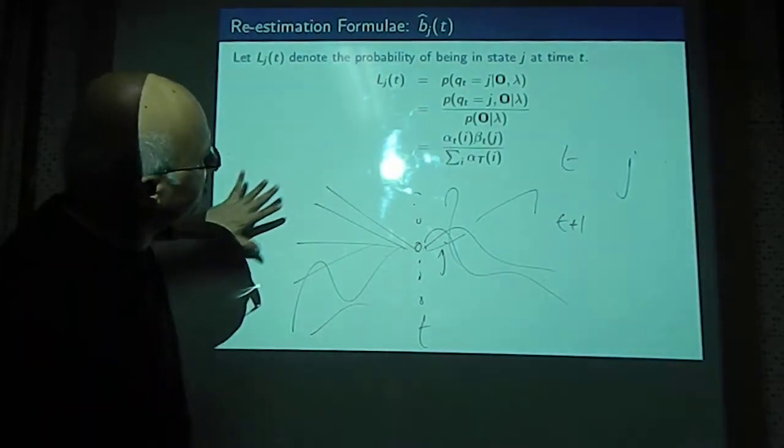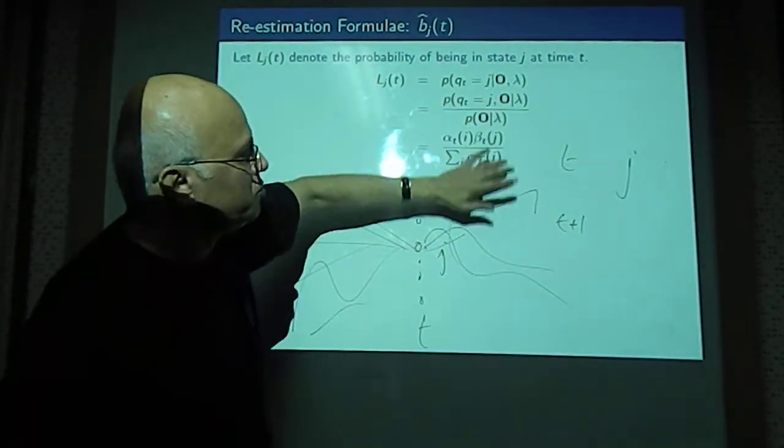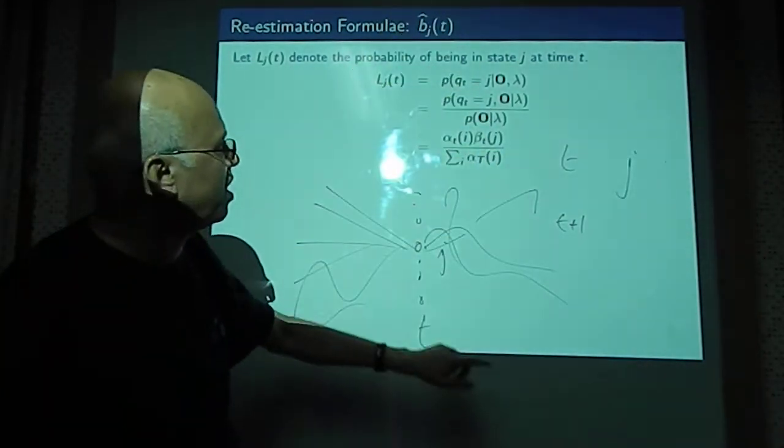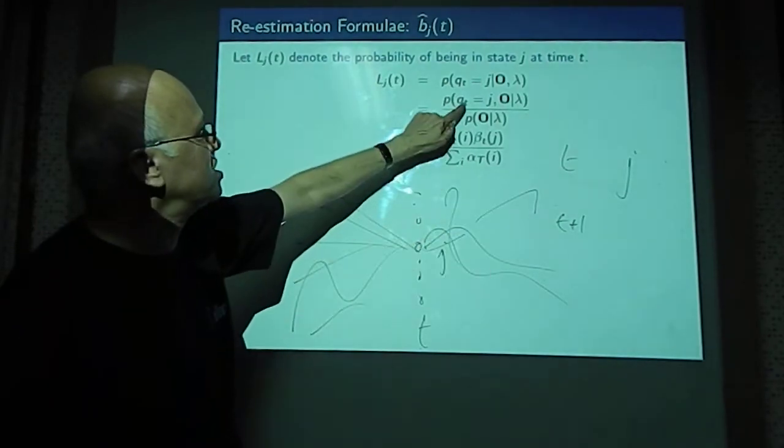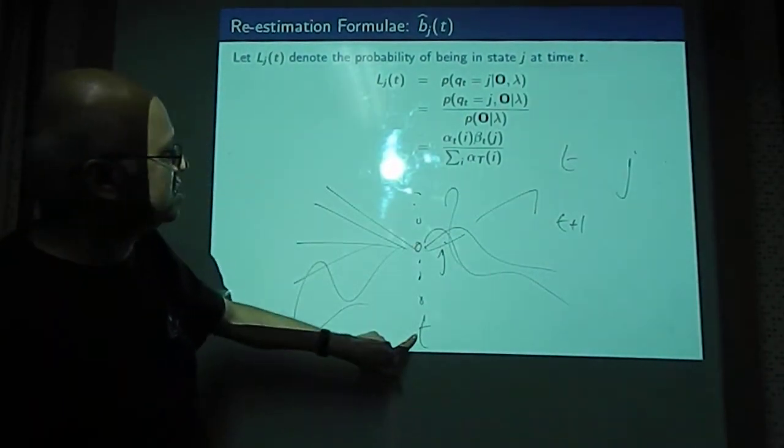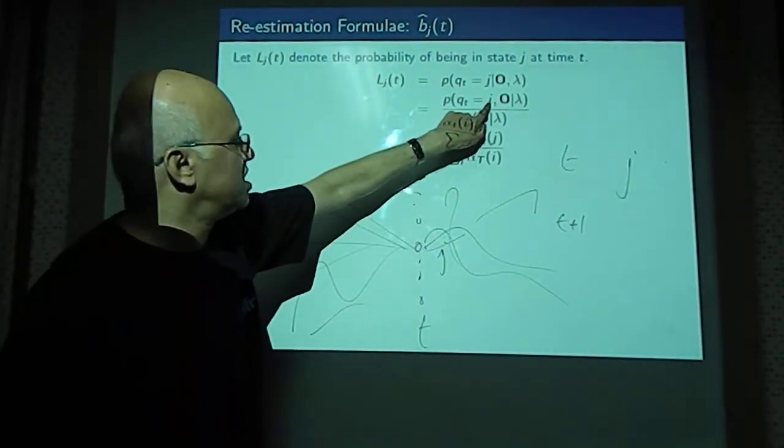Given the training model and all the training data, we consider the probability of all paths except one condition. What is the condition? That at time instant t, the system has to be in state j.